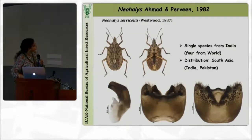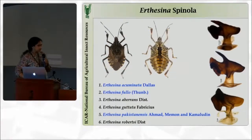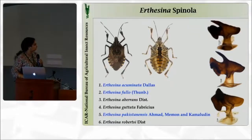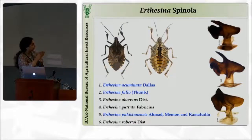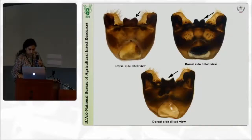Here is another genus called Neo-Halis. Previously it was included under Halis; you can clearly make out that the shape of the paramere is different. Ahmad and Parveen in 1982 proposed the new genus Neo-Halis for accommodating Halis cerecolis. Coming to the next genus, Erthicina — we have around five species reported; Erthicina pakistanis is newly recorded. Based on the parameres, we have collections of only three species. The anterior mesial lobe of the paramere and the spine of the paramere and the angle it makes, as well as the pygophore median process on the dorsal side, show clear-cut variation, giving us three species.